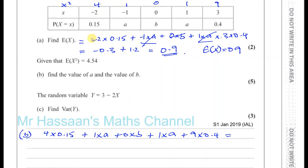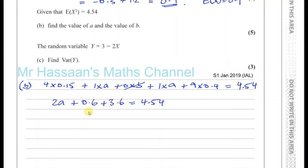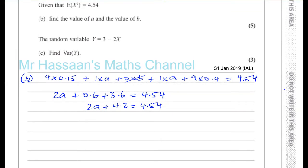The B term disappears and we're left with 2A, plus 4 times 0.15 which is 0.6, plus 9 times 0.4 which is 3.6, and that equals 4.54. So we have 2A plus 4.2 equals 4.54, therefore 2A equals 4.54 minus 4.2, which gives 2A equals 0.34, and therefore A equals 0.34 divided by 2, which is 0.17.